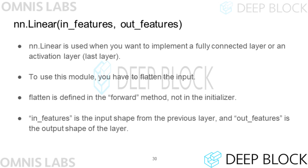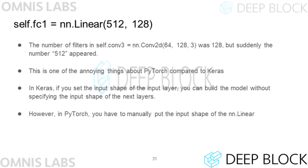In the code after flattening, the input shape to the linear layer is set to 512. In Keras, if you specify only the input shape of the first layer, the input shape of the next layer is automatically set. But in PyTorch, you must specify the input shape of all layers. Fortunately, even if you do not know the input shape of the linear layer after flattening, there are ways to find this number.